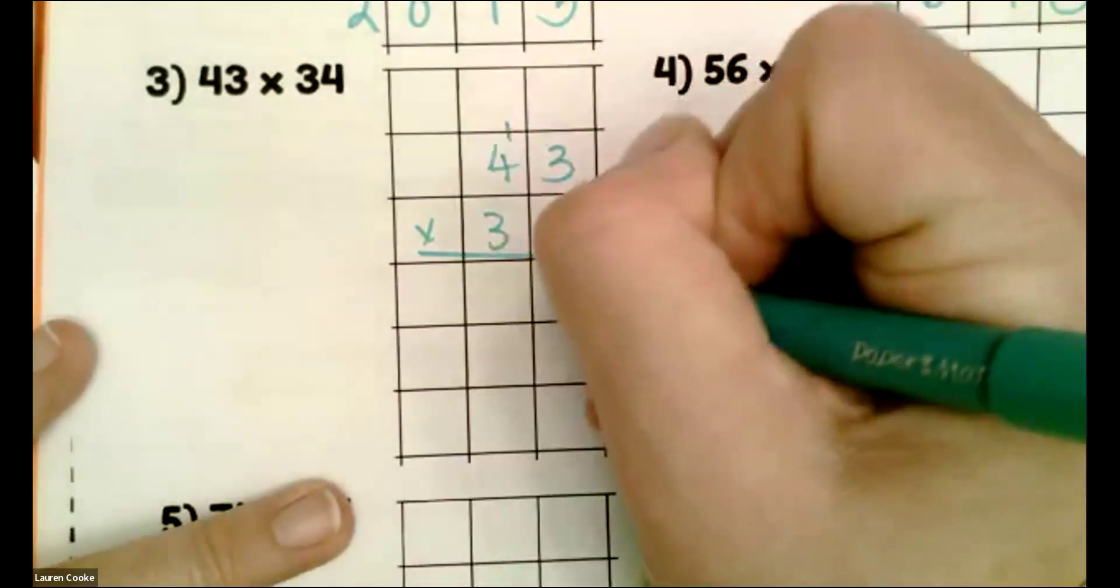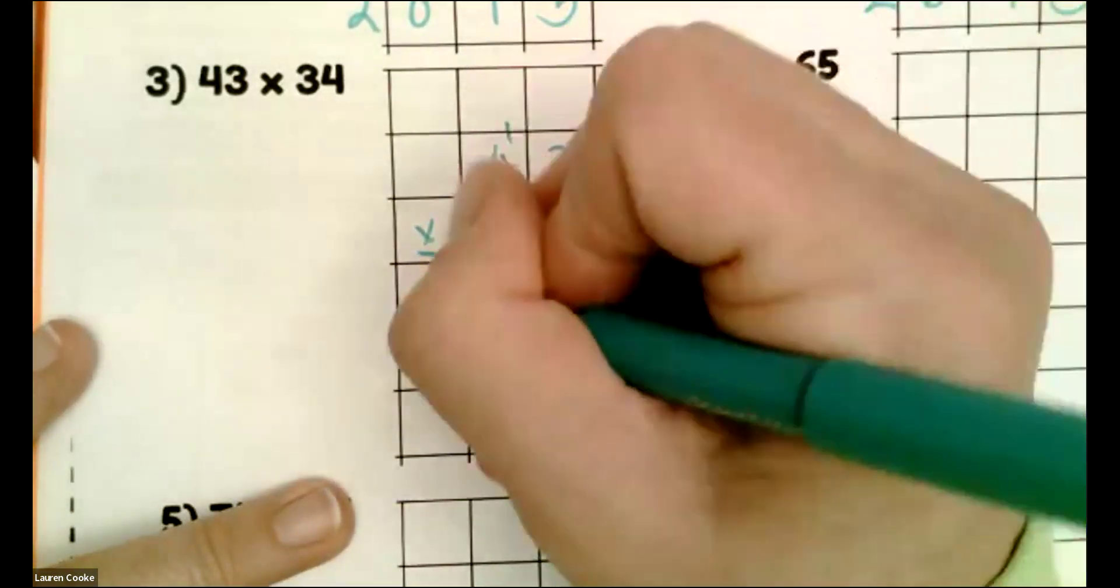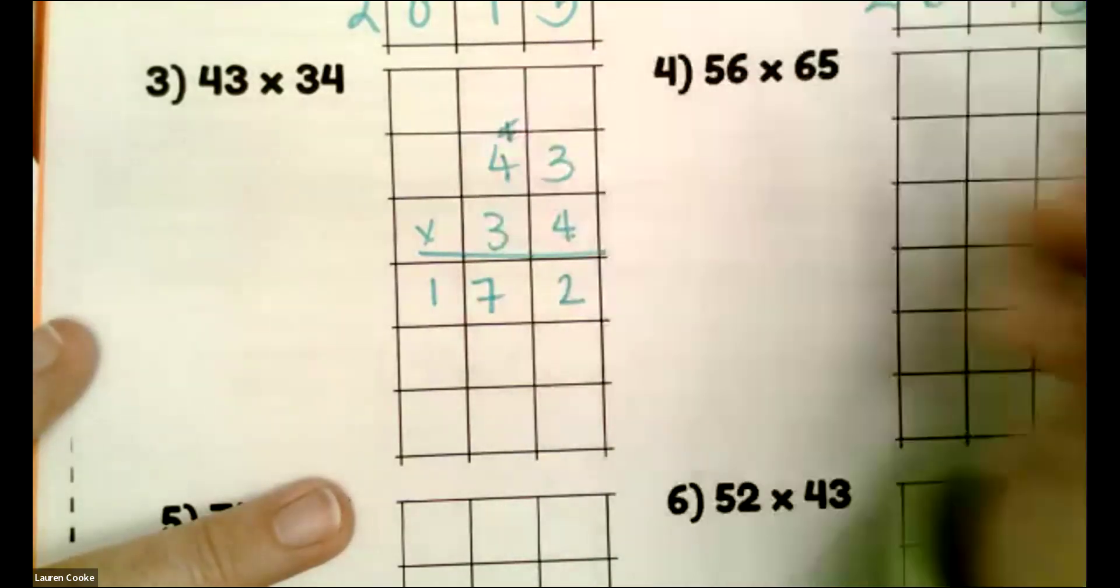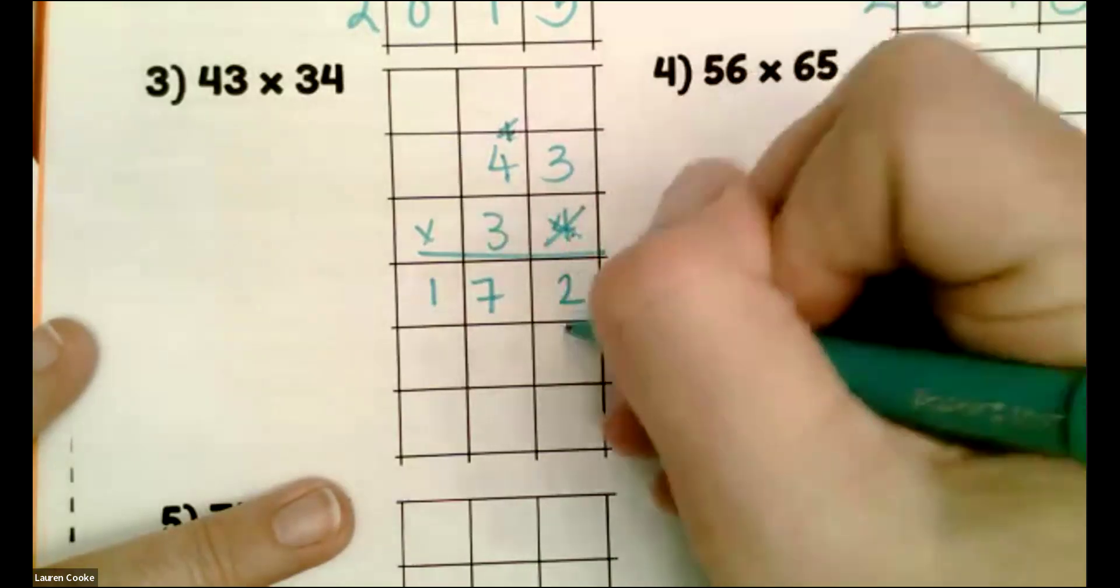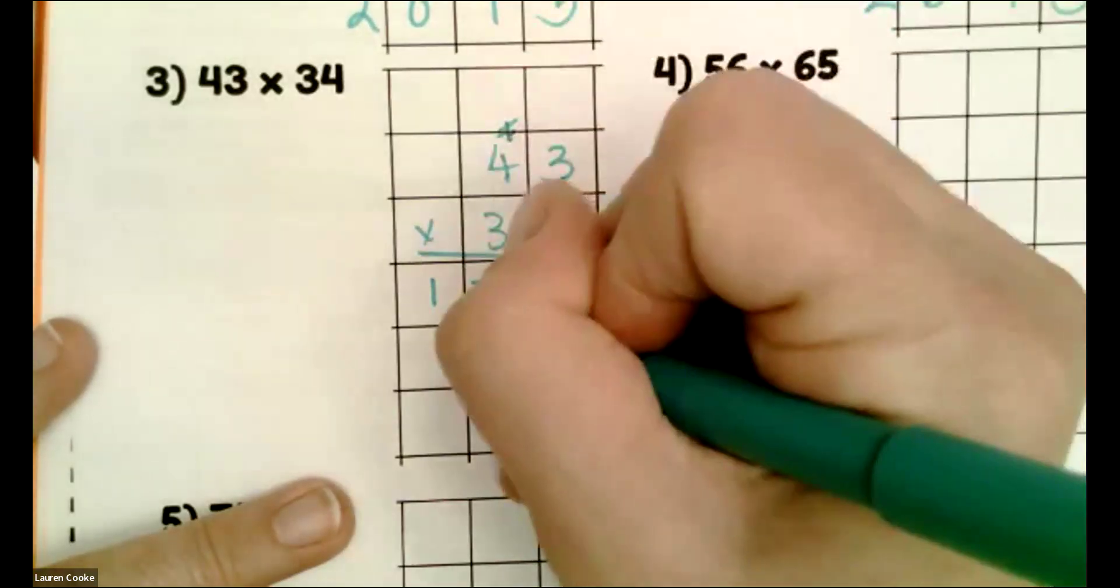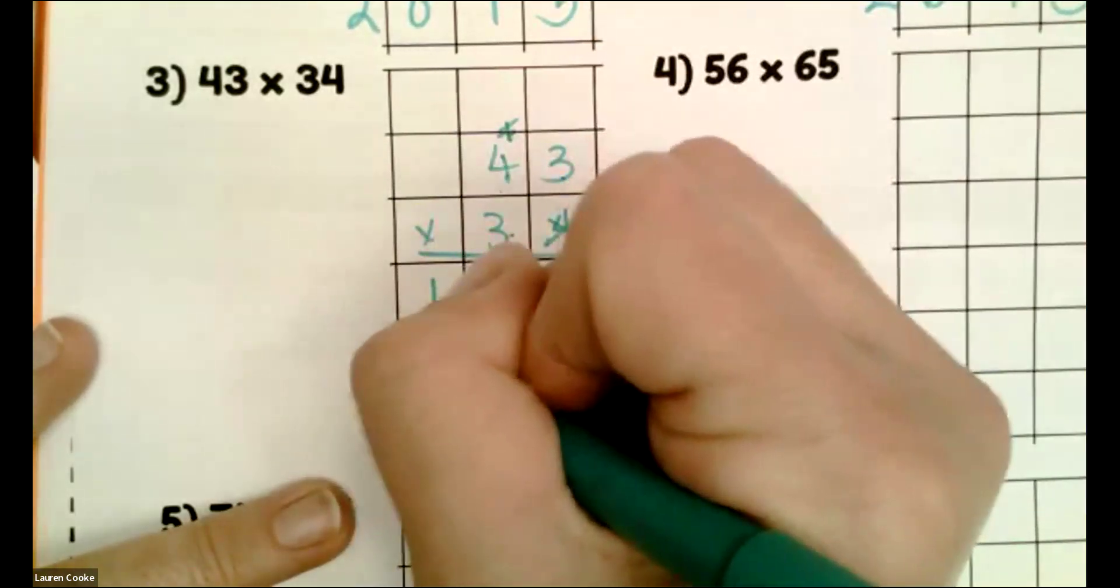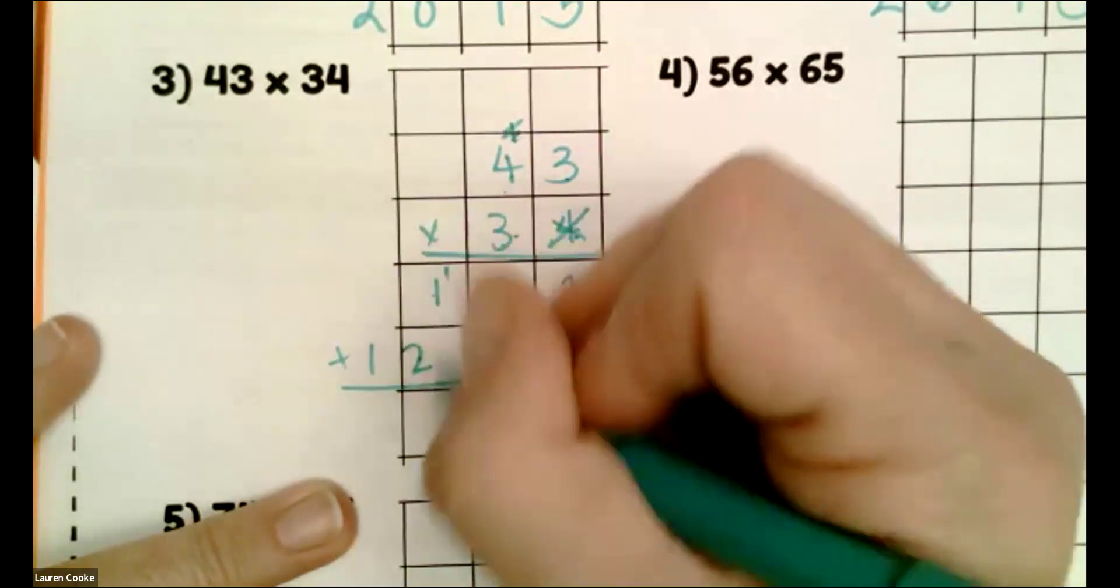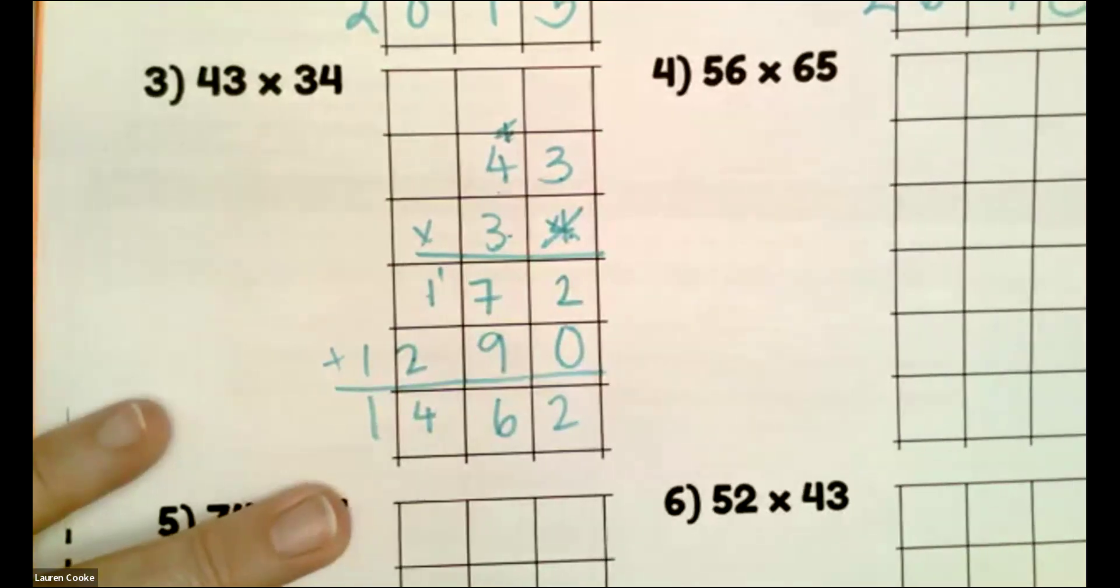Three times four is 12. I'm carrying 16, 17, one number in each place value. Done with the one. Pay this dust. Three times three is nine. Three times four is 12. Two, 16, two, three, four, one.